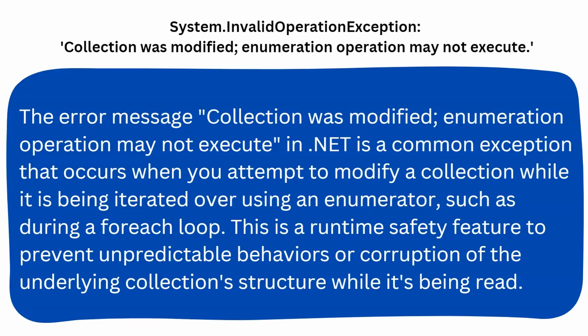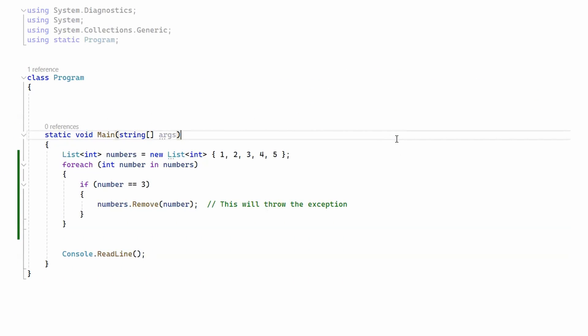You're going to see this error message in your code when you attempt to modify a collection while it is being iterated over using an enumerator, such as during a foreach loop. Keep in mind that the InvalidOperationException is a broad exception — it can also be thrown during concurrent modification, some LINQ operations, and when you try to use disposed objects, among other cases. In this video I'm going to focus only on this specific instance.